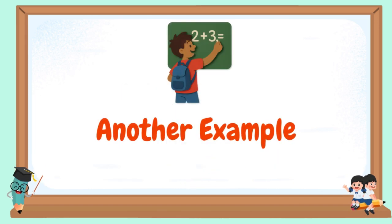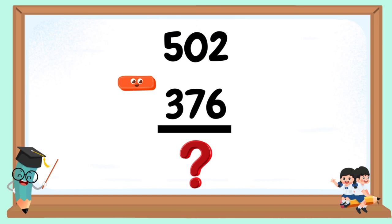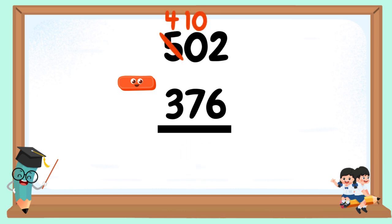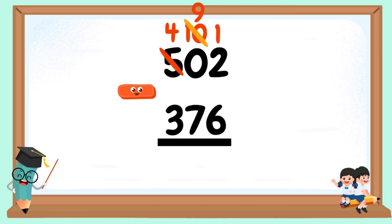Another example: 502 minus 376. 6 minus 2 cannot be done. Borrow 1 ten from the 10's column, but there are 0 tens, so regroup from the 100's. Borrow 1 from 500; 5 will become 4 and 0 will become 10. Now borrow 1 from the 10: 10 becomes 9 and 2 becomes 12. 12 minus 6 equals 6. 9 minus 7 equals 2. 4 minus 3 equals 1. 126 is our difference.